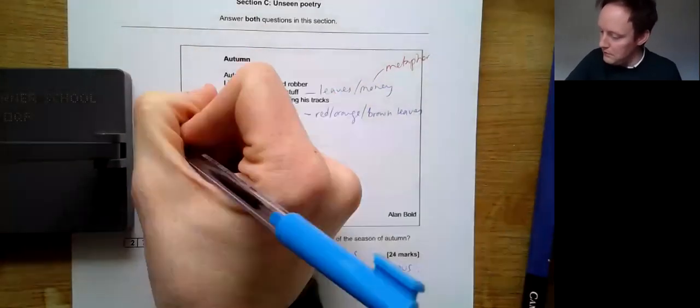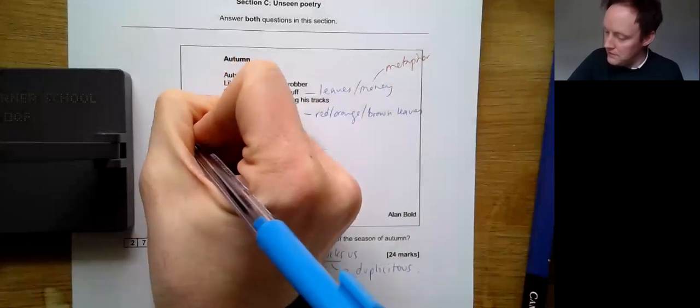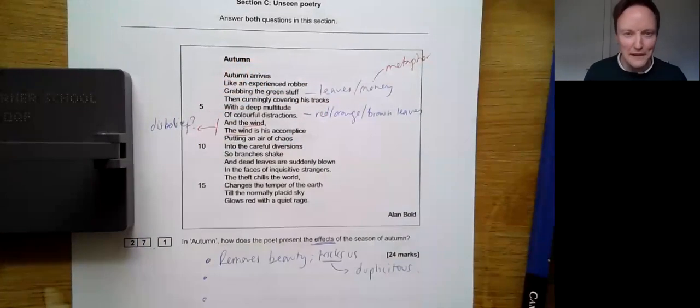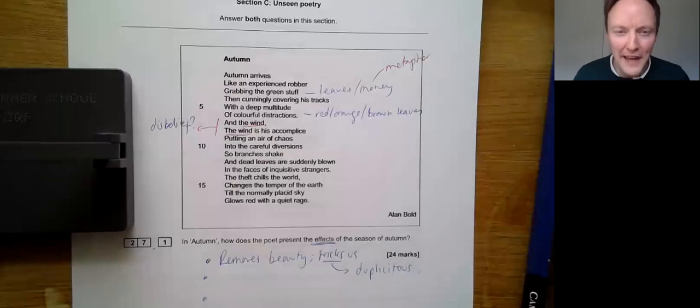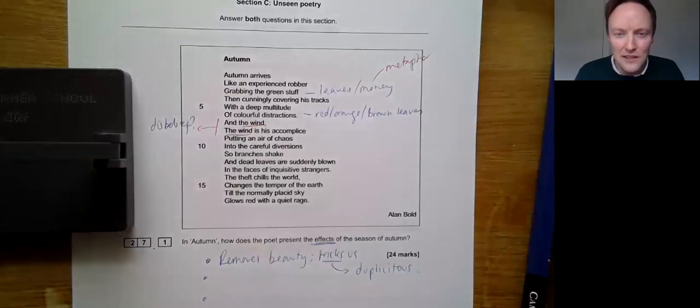Let's use blue, red means method. Captures the sort of disbelief. The wind is his accomplice. The robin to his Batman. If you pardon the pun. Putting on an air of chaos into the careful diversions, so that branches shake, and dead leaves are suddenly blown into the faces of inquisitive strangers.